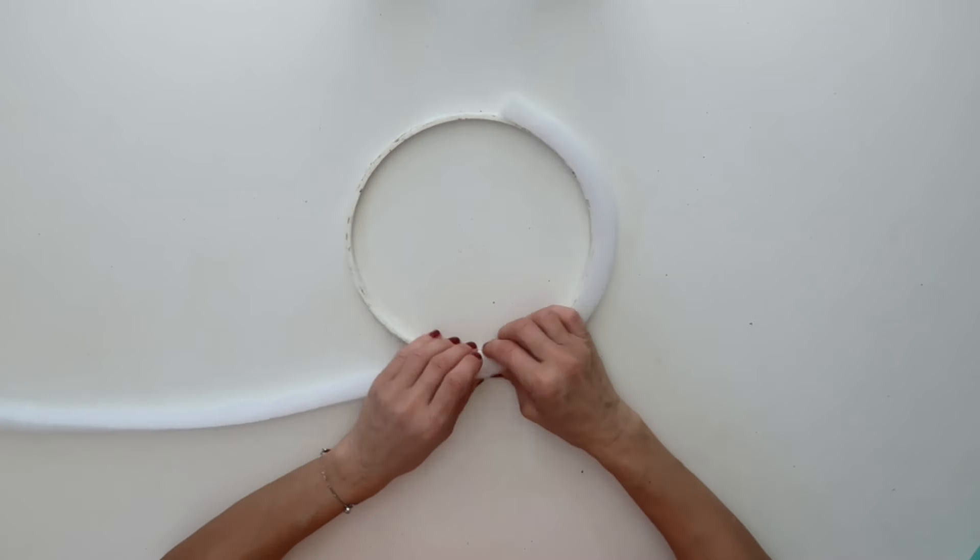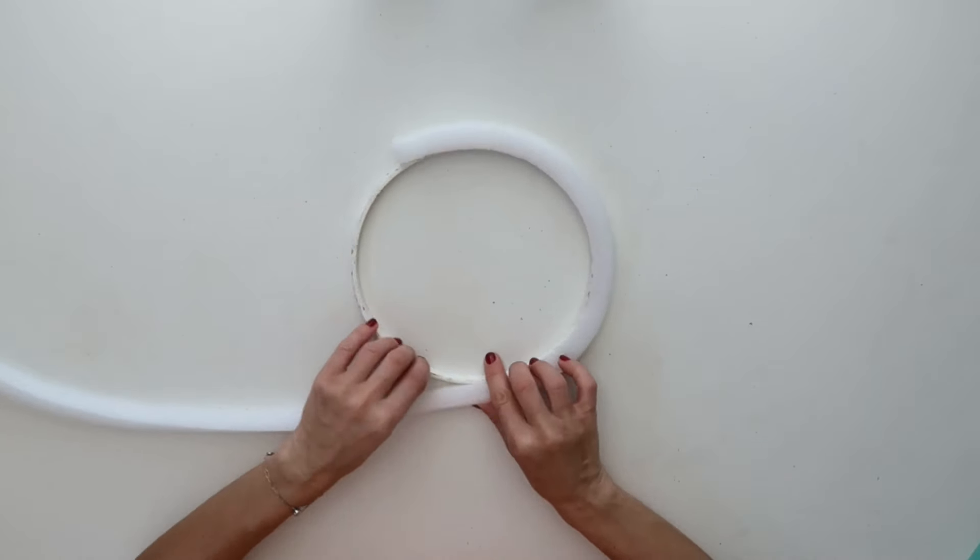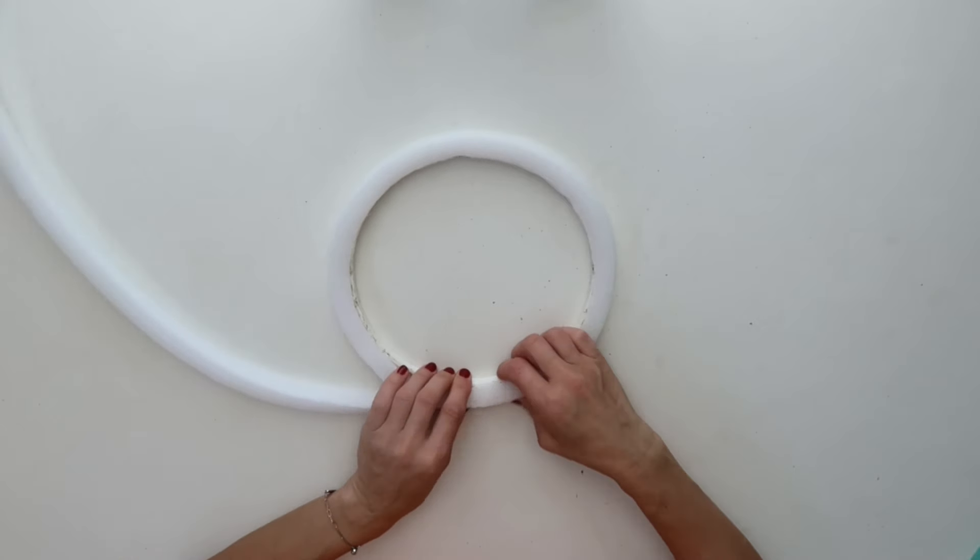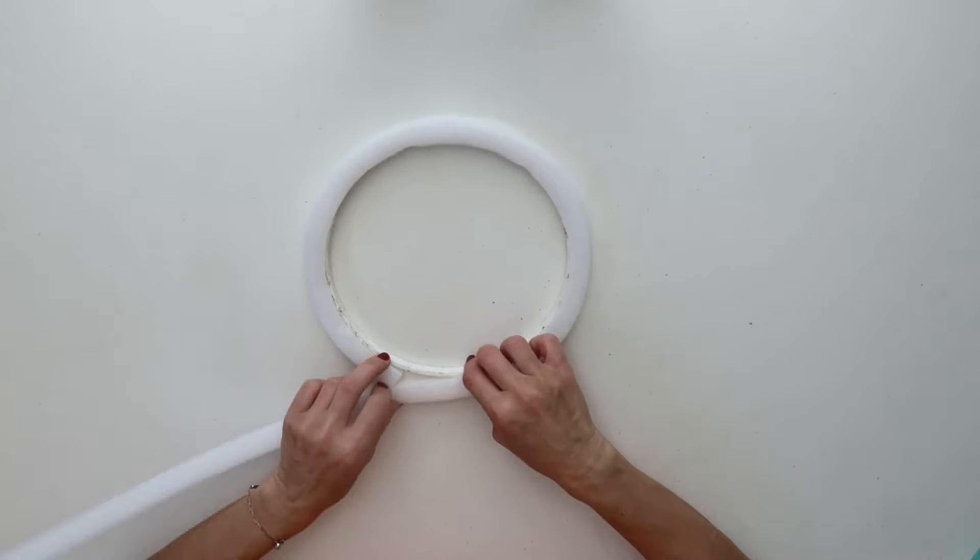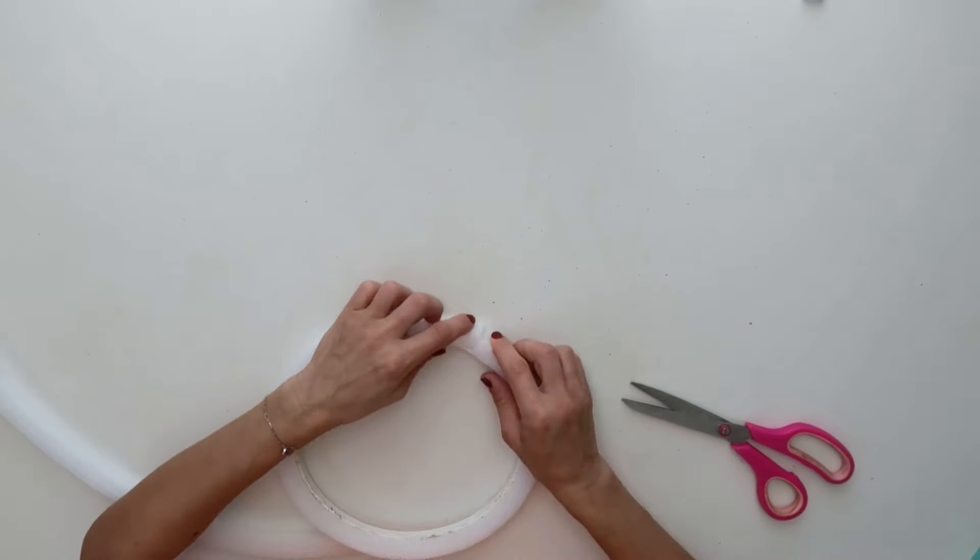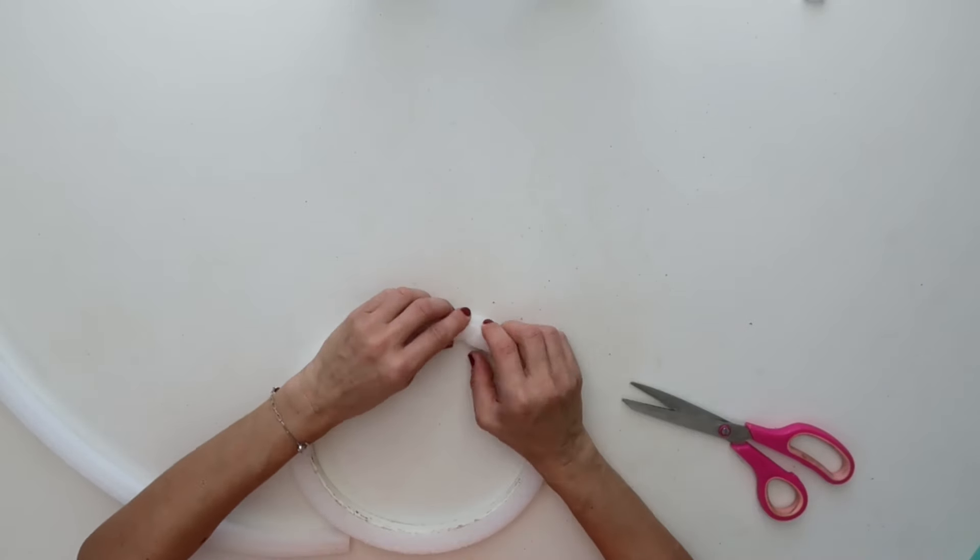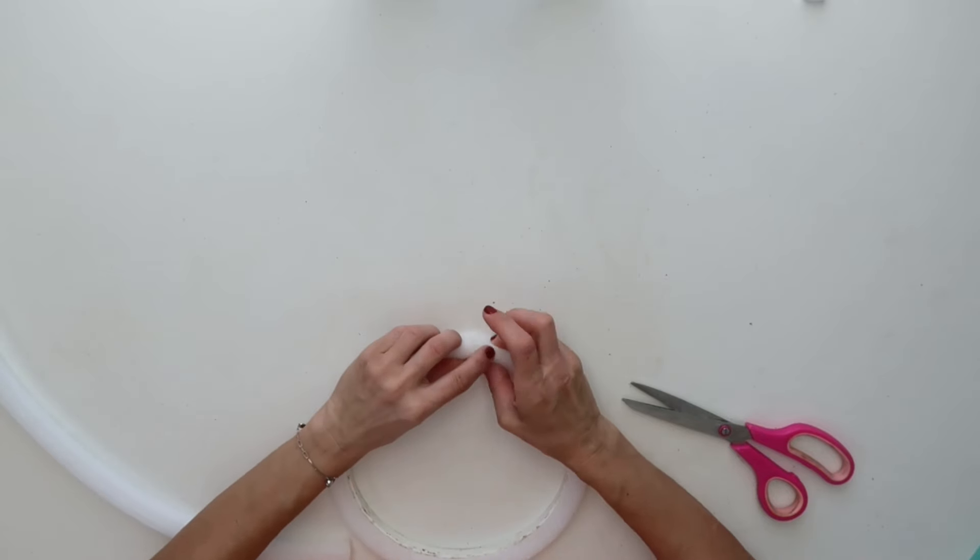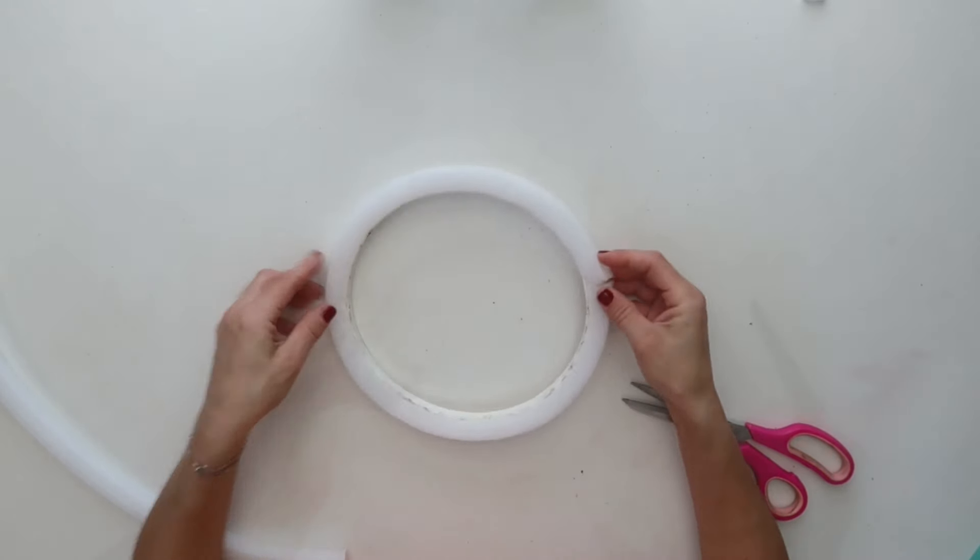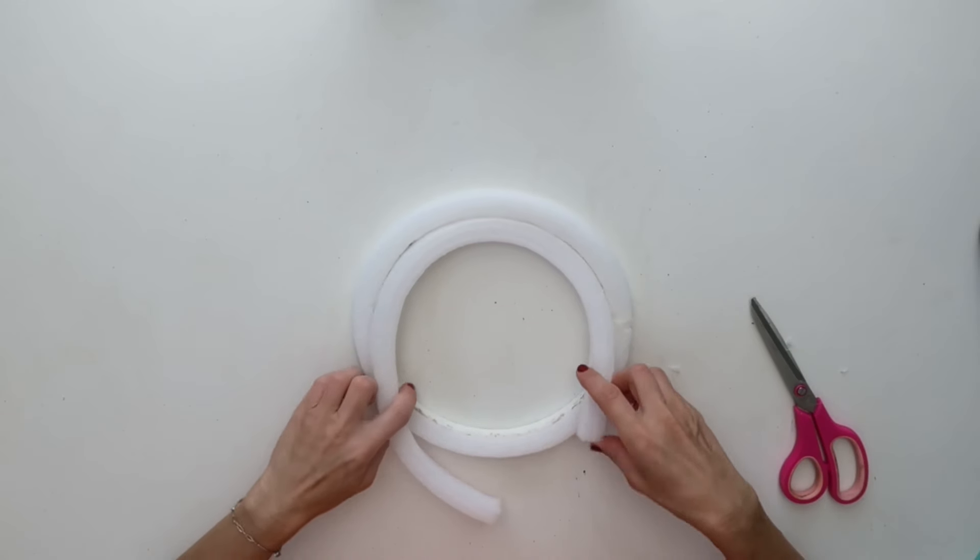Now I'm attaching that around the perimeter of this embroidery hoop using hot glue. After I am done with the outside, this is how it looks like. I really wanted to leave it this way at the beginning.